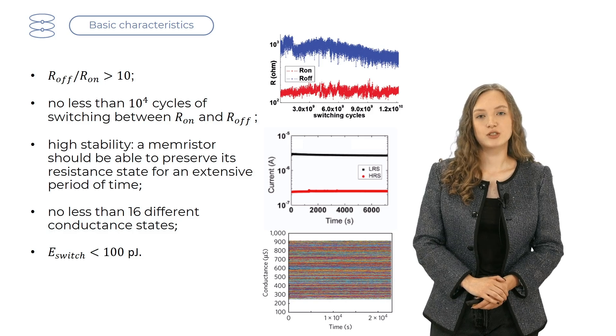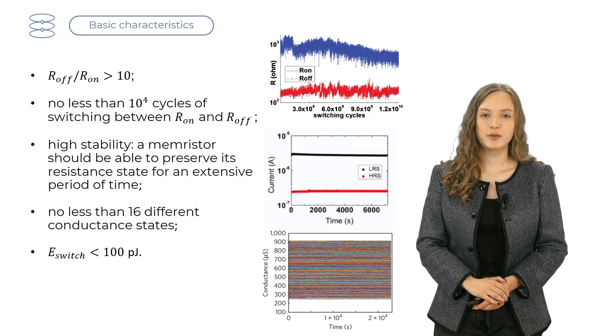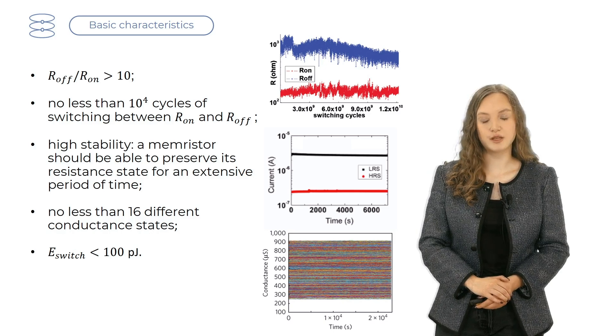The threshold energy for switching between on and off states should be lower than 10 pJ. So far, a memristor that would satisfy all these requirements hasn't been found, but I believe it's a matter of time, as the field is rapidly developing.